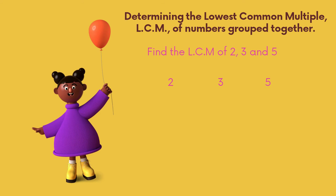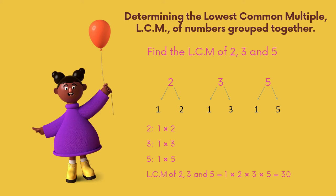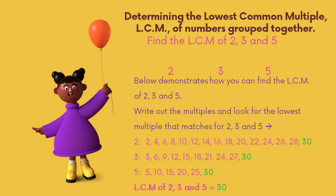Now let's move on to determining the lowest common multiple (LCM) of numbers grouped together. Find the LCM of two, three, and five. Since two, three, and five are all prime numbers, we use all numbers present: one, two, three, and five. Multiplying them all together gives thirty. You can also write out multiples of two, three, and five and find the lowest match — thirty appears in all three lists. Therefore the LCM of two, three, and five is thirty.